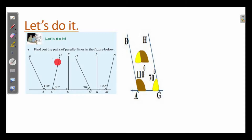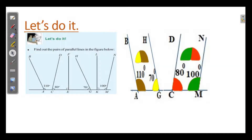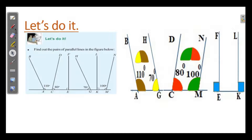Similarly, this 80 degree and this 100 degree make 180 degrees. So the other pair is CD and MN. And the third pair is EF and LK.